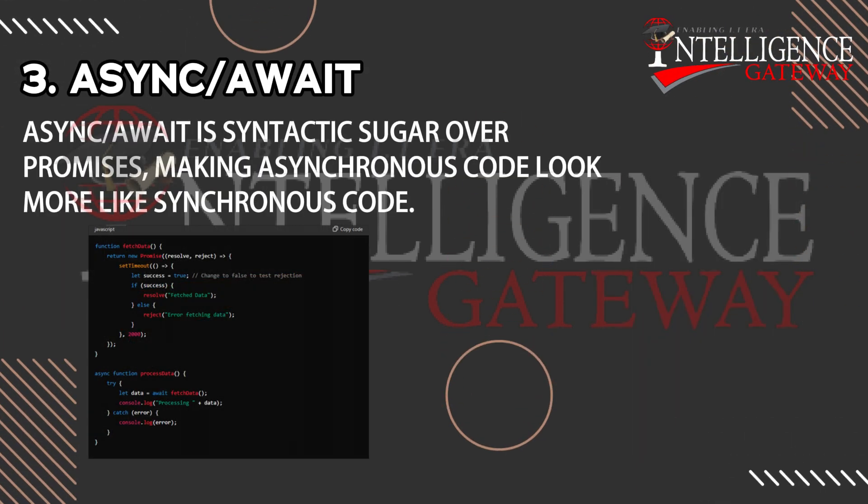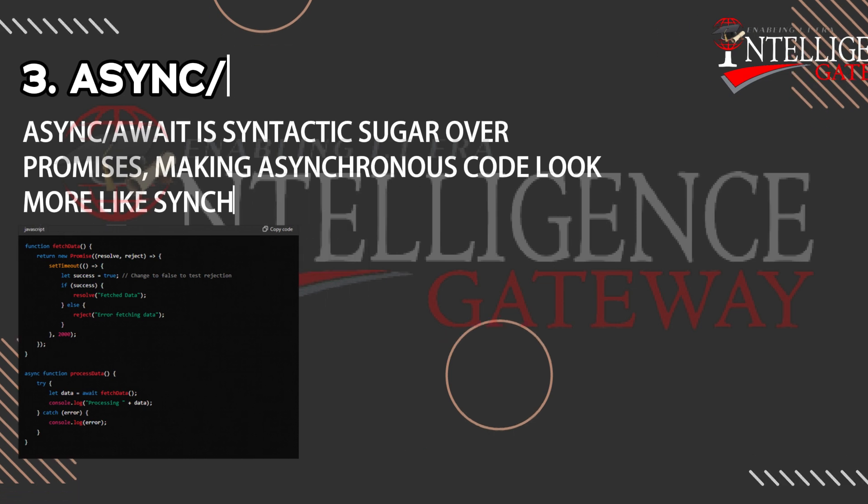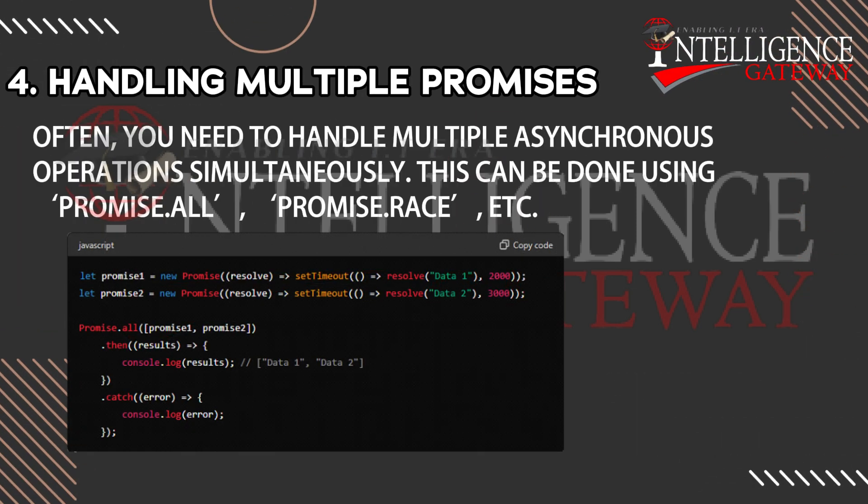Async/await is syntactic sugar over promises, making asynchronous code look more like synchronous code. Often, you need to handle multiple asynchronous operations simultaneously. This can be done using Promise.all, Promise.race, etc.